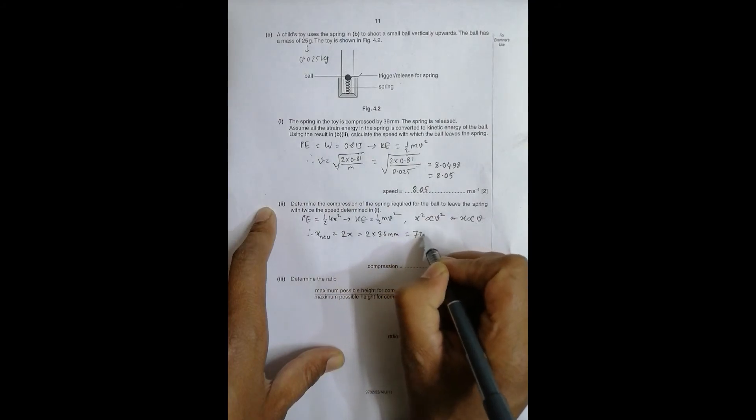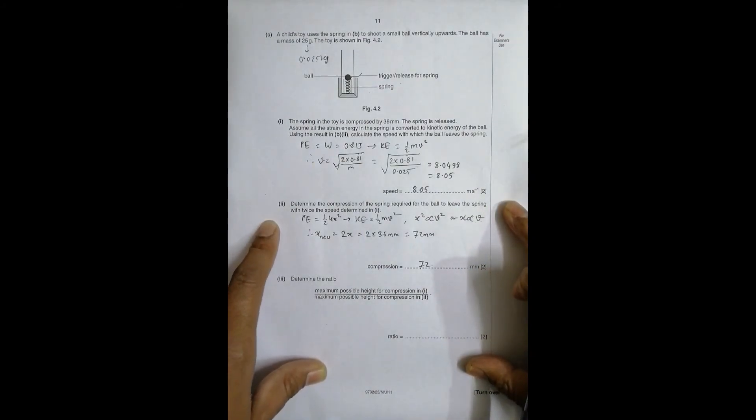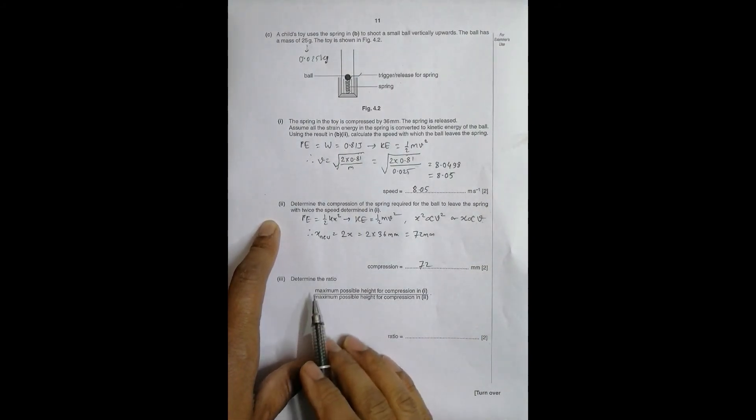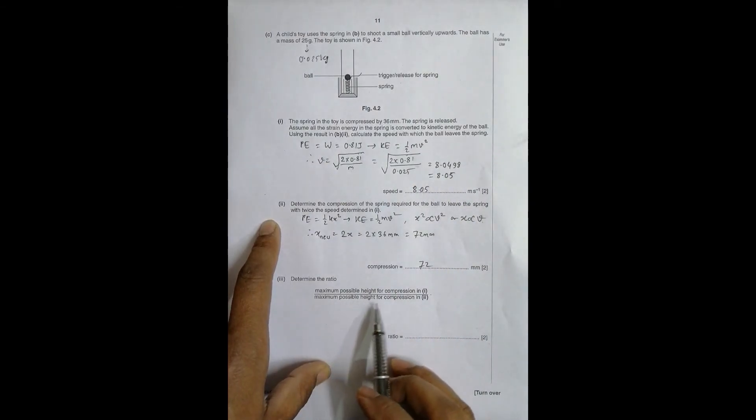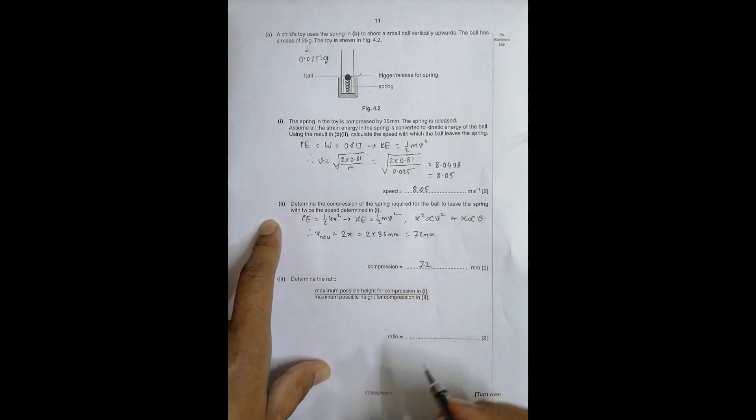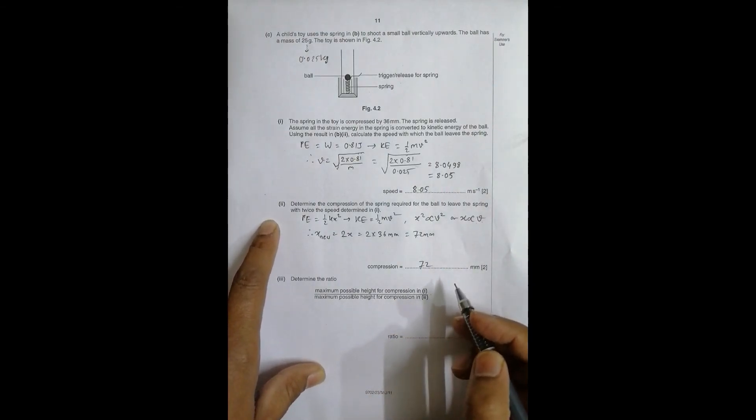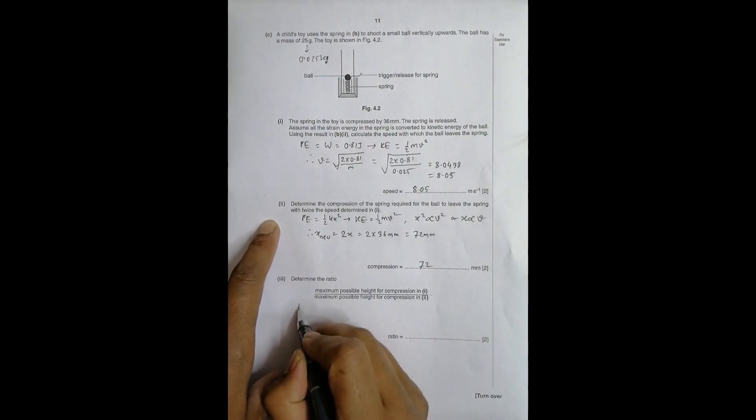Now the last question: determine the ratio of maximum possible height for compression in one to maximum possible height for compression in two. We have some compression which was 36 millimeter, so the height for that is something h1. In case 2, we have to compare these two. This height one should be equal to v1^2 by 2g, that's the formula from kinematics.